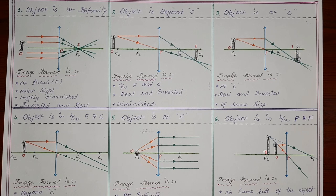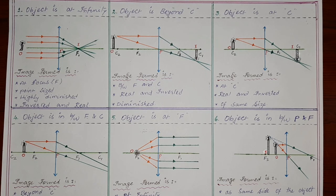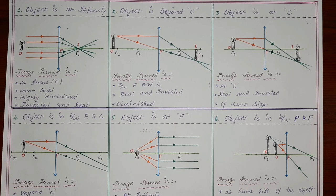These are the ray diagrams of biconvex lens showing the possible positions where we can place the object in front of a biconvex lens. Let us discuss all the ray diagrams one after the other.